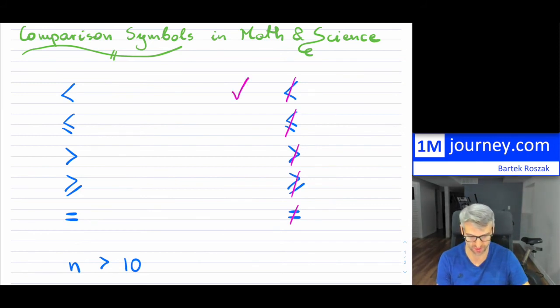So this one, for instance, would mean not less than. This one would mean not less than or equal to. This one would mean not greater than, and so on.